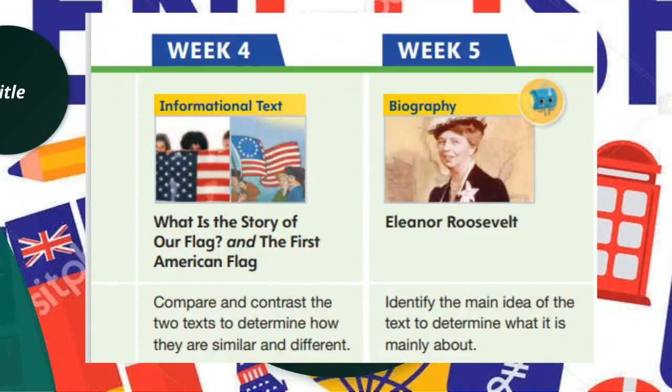In week four, it's an informational text — we will learn about the story of the flag and the first American flag. We will compare and contrast two texts to determine how they are similar and different. In week five, we will learn about the life of Eleanor Roosevelt and identify the main idea of the text to determine what it is mainly about.